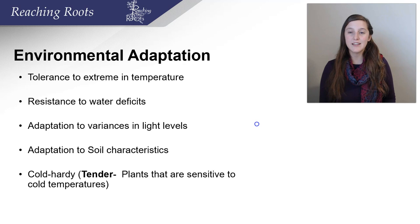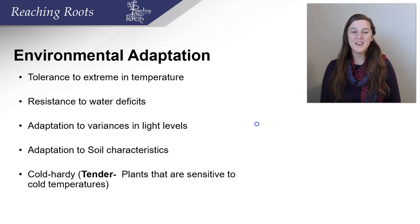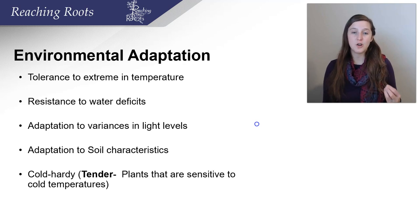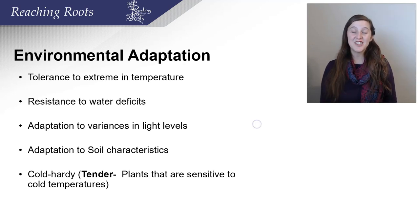For example, if a plant is going to live in a colder area, it's going to have to have tolerance to cold temperatures. If it's growing in a hot area, it needs tolerance to those hot temperatures. Plants growing in dry areas also have to have resilience to water deficit, water stress, or drought. Different plants are also adapted to varying light levels, and some plants have adaptations to growing in certain soils that may be more challenging. Plants that are cold hardy are very tolerant to cold temperatures, while tender plants are sensitive to cold.